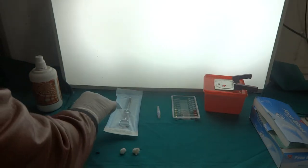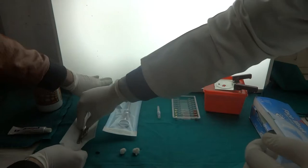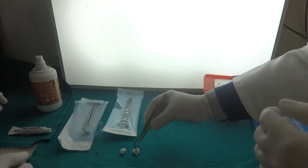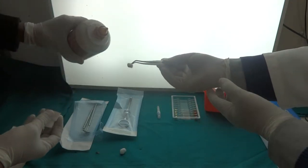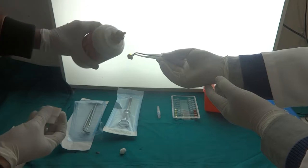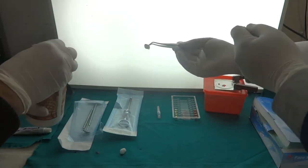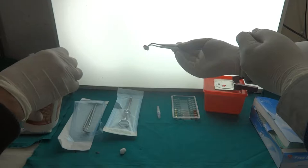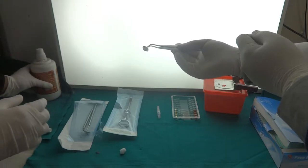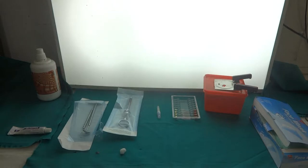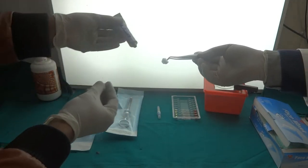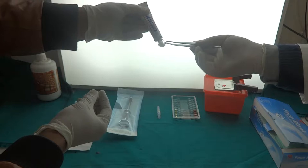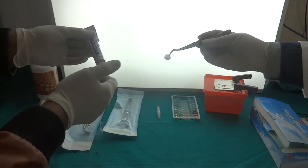First of all we will wear gloves and then we will apply antiseptic solution on the cotton palette and place it in the buccal vestibule. With the help of another cotton ball we will apply topical local anesthetic solution and place it in the buccal vestibule.